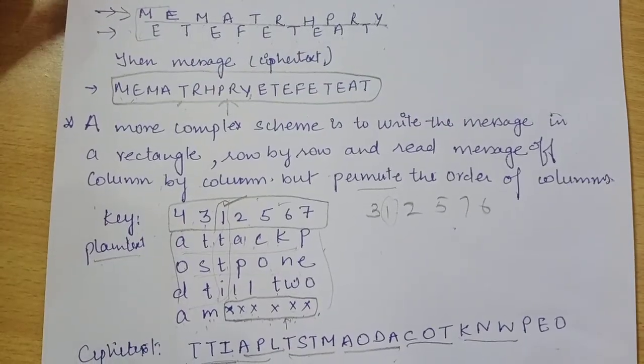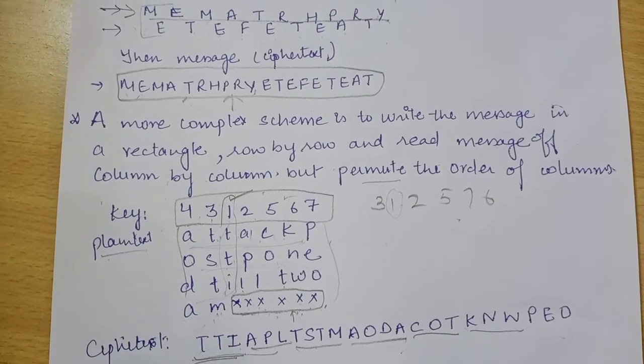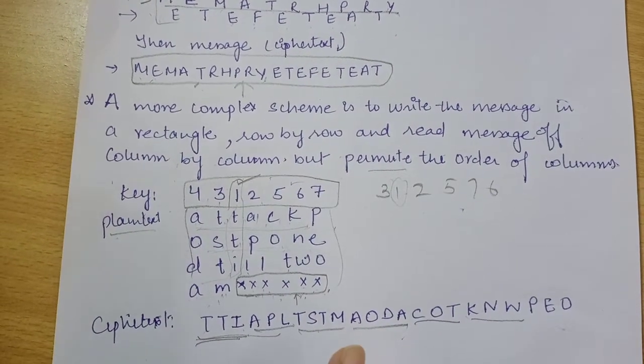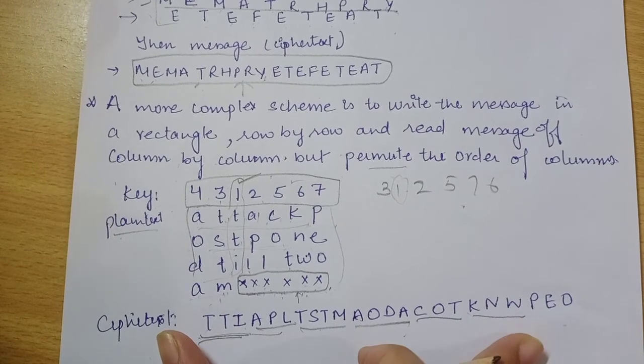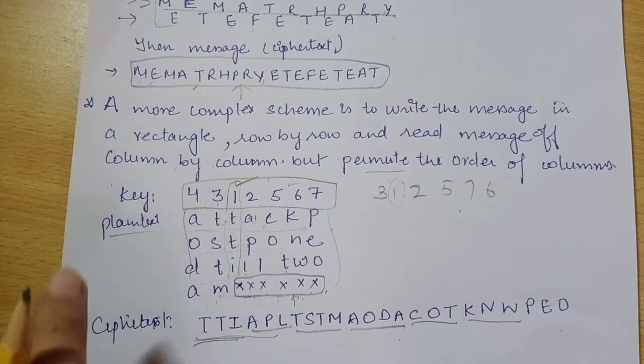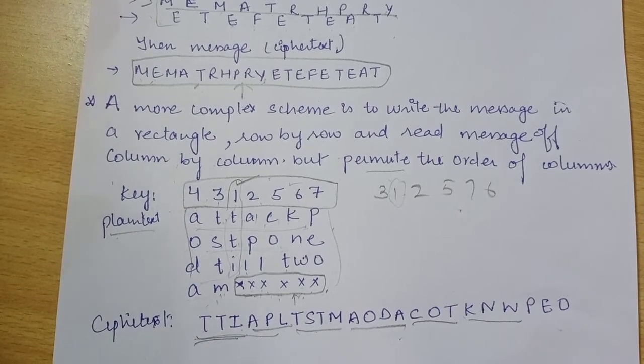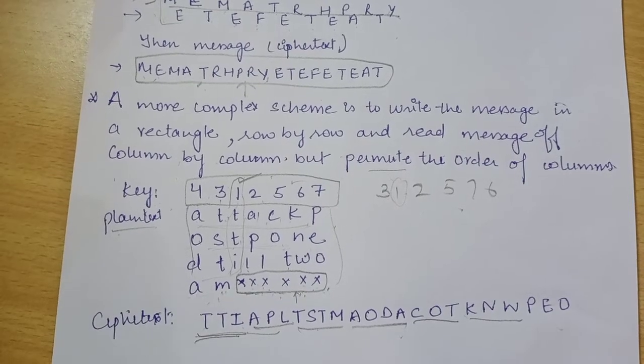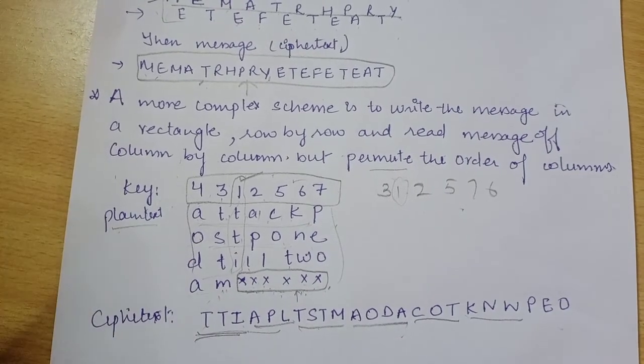And in this technique it is also very easy, so the decryption part is also very easy. The receiver will count the words in the ciphertext and write in the rectangle of the same key and will read it. After writing it column-wise, the intruder will read row-wise.